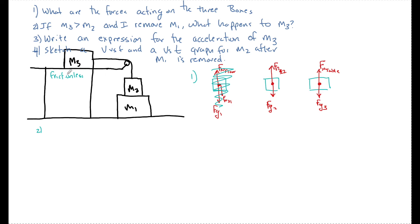we would see that the force is acting in the direction of motion. We'd have an FG down this way. So this system would want to accelerate even if M3 was much greater than this because this is friction. So once I remove M1,